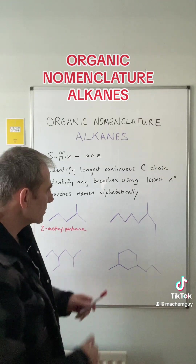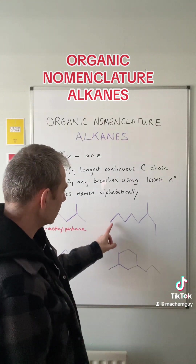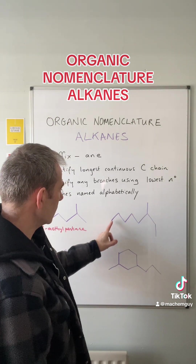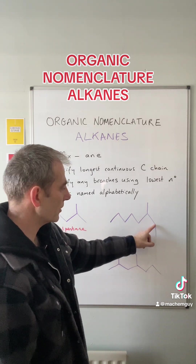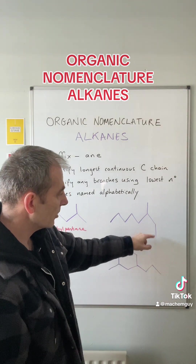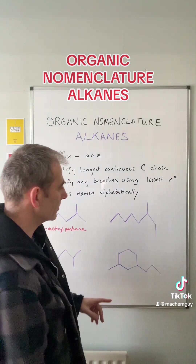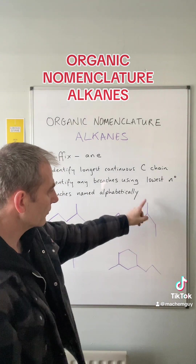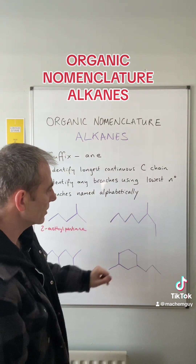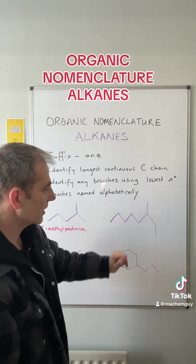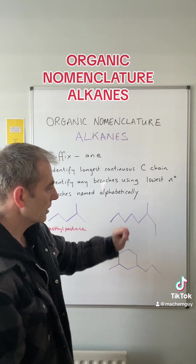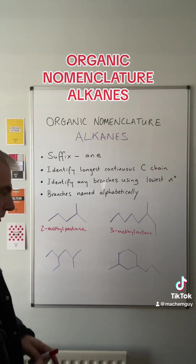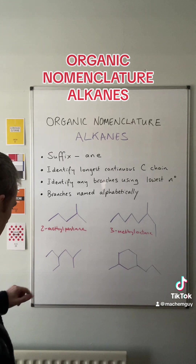Moving on to the second example: counting the continuous carbon chain one way gives one, two, three, four, five, six, seven, and the other way one, two, three, four, five, six, seven, eight — that extra carbon isn't a branch, it's still part of the continuous chain. So the longest chain is eight, giving us octane. There's a methyl branch, and counting from the closer end gives one, two, three — so this is 3-methyloctane.